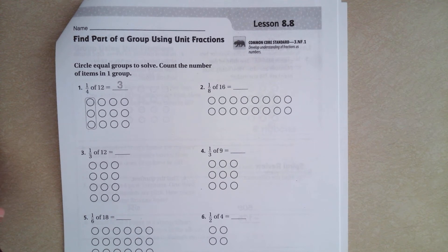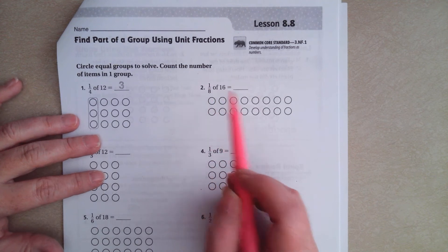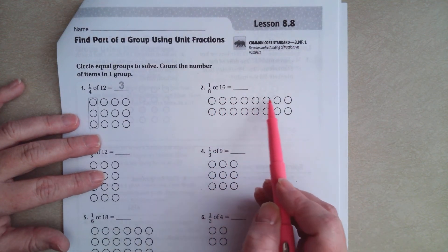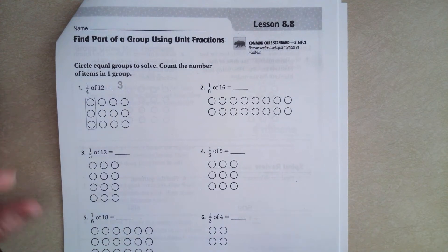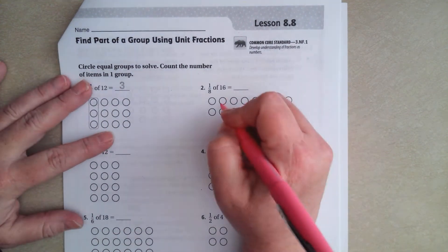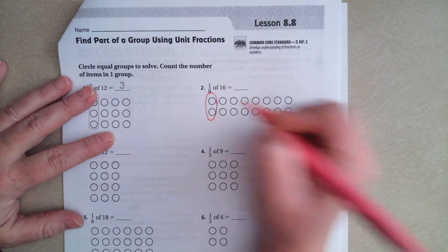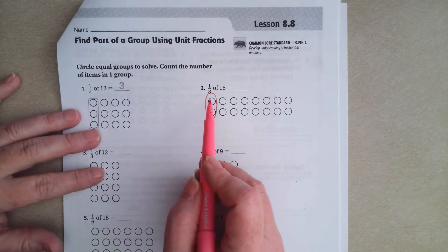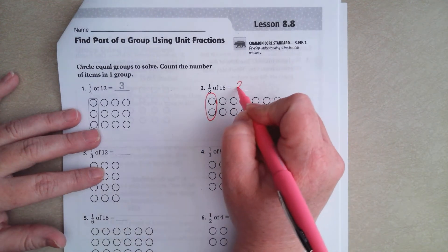We're going to get started with number 2. What we're going to do is find 1/8 of 16. So I'm going to count: 1, 2, 3, 4, 5, 6, 7, 8. There are 8 stacks, which means that 1 of those 8ths is those. So 1/8 of 16 is going to be 2.